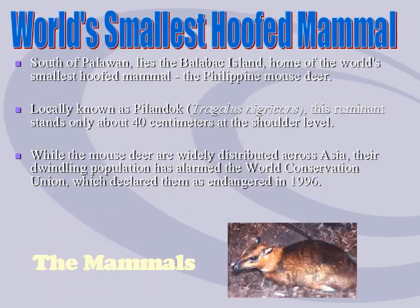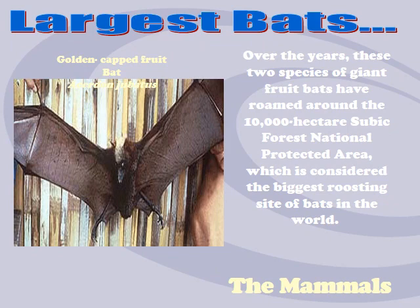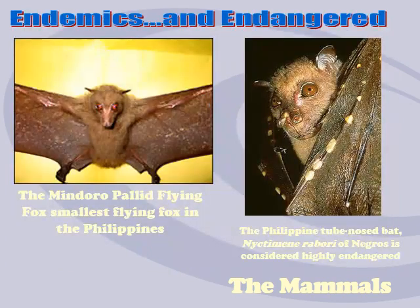Then we have the Palawan Bearcat, the world's smallest hoofed mammal the Pilandok (Tragulus nigricans) found in Palawan, and the Dugong dugon, or Sea Cow. Sometimes called mermaid because it looks like a person from afar and has a tail, but it is actually a marine mammal. Biology says it can survive more than 70 years.